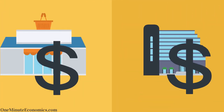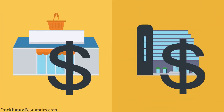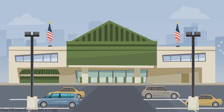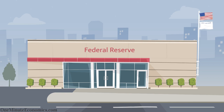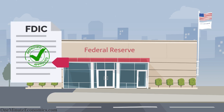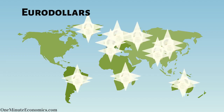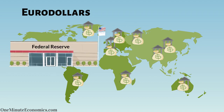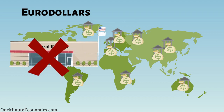In the end, it became obvious that there are two markets for US dollars. One, the domestic market — dollars used within the United States — which are regulated by the Federal Reserve and FDIC insured as far as deposits are concerned. Two, eurodollars — US dollars held outside the United States and not regulated by the Federal Reserve.